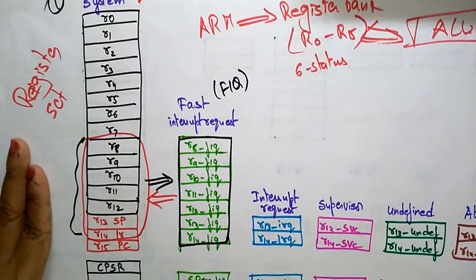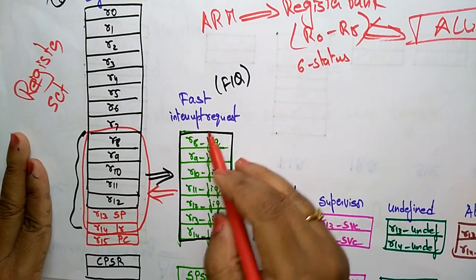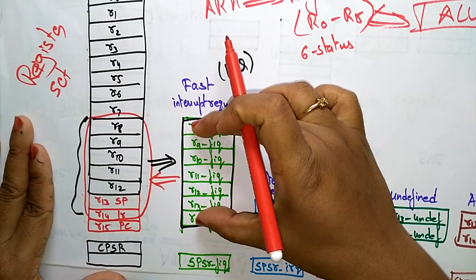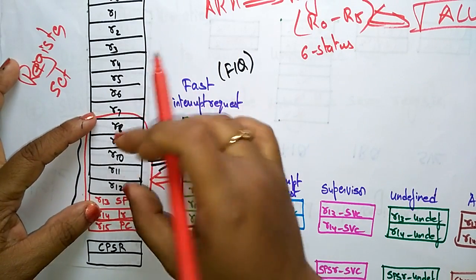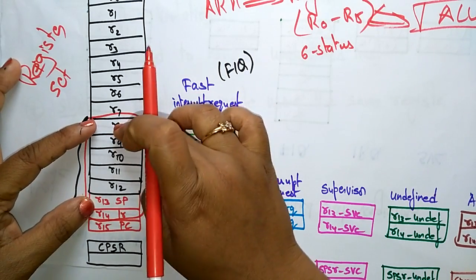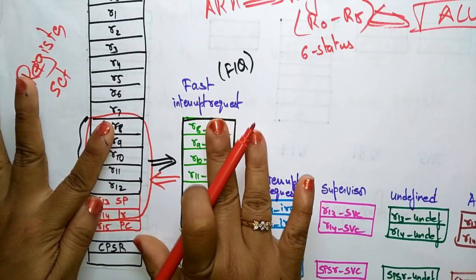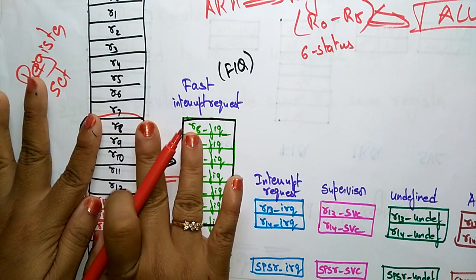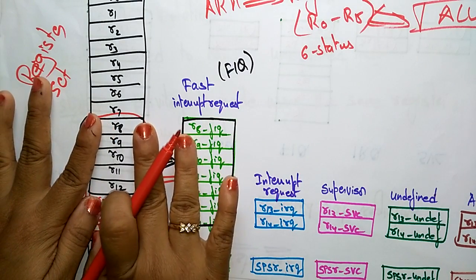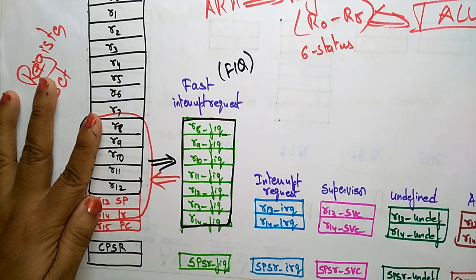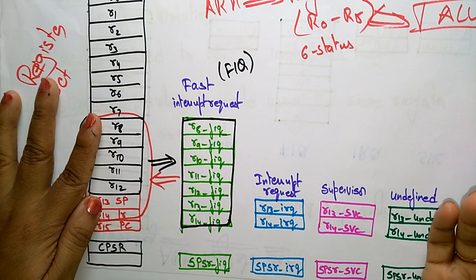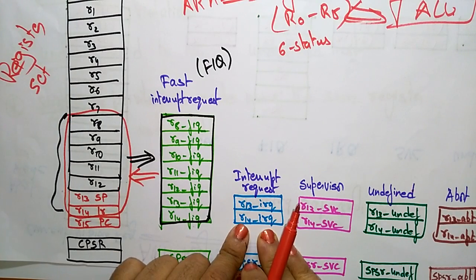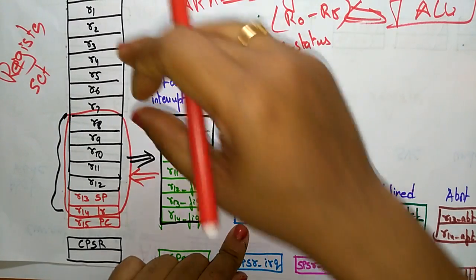Whenever the controller jumps to the fast interrupt request, it has to replace R8 to R14 with the FIQ-specific registers. Once those registers are replaced, the processor understands a fast interrupt request has arrived and it needs to perform the operation very quickly.